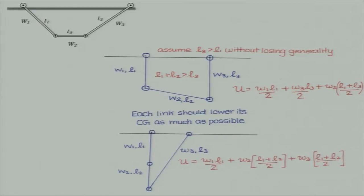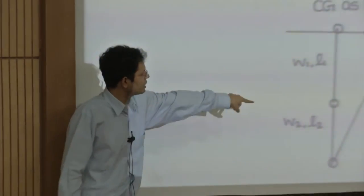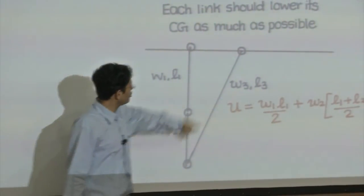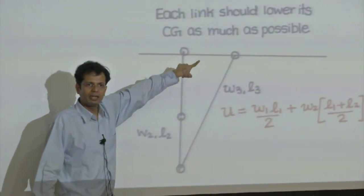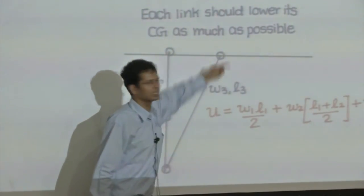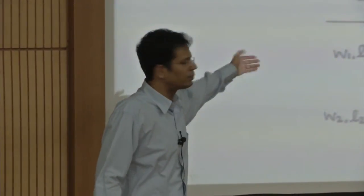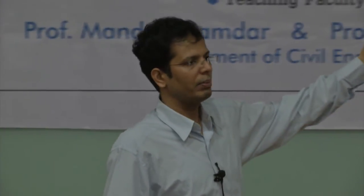In case L1 plus L2 is less than L3, the second configuration will be the best. L1 is as low as possible, L2 is as low as possible. The angle of the third chain is found by drawing an arc of radius L3 from this point such that it intersects the endpoint, giving the final configuration. The angle is immediately known: cos theta equals L1 plus L2 divided by L3. Just try perturbing the system from this point and you will see that the energy will always be more, because the center of mass will always go up if you depart from this configuration.